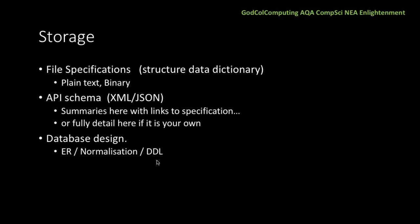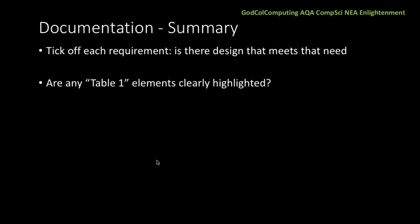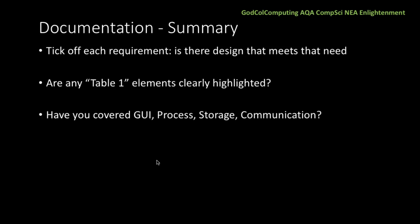Apart from anything else, you need to blow away the database sometimes — it's so nice to have the DDL just to magically recreate it. To make sure you have fully articulated all elements of the design, just have your list of requirements there and tick it off. Have you got some design that meets each particular requirement? Have you made sure that any Table 1 Group A elements are really clearly highlighted in your design for the process section? Have you got a bit of GUI, a bit of process, a bit of storage, a bit of communication? If you haven't, you won't even get middle-band marks. If you've covered each of these fully, then you'll get top-band marks.